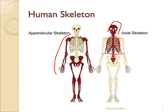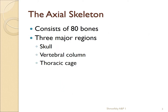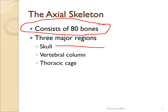Later on we'll look at the appendicular skeleton, which includes the scapula, clavicle, the pelvic girdle, and the lower appendages. To reiterate, the three major regions of the axial skeleton account for approximately 80 bones — the skull, the vertebral column, and the thoracic cage. Luckily, a lot of them are duplicates.